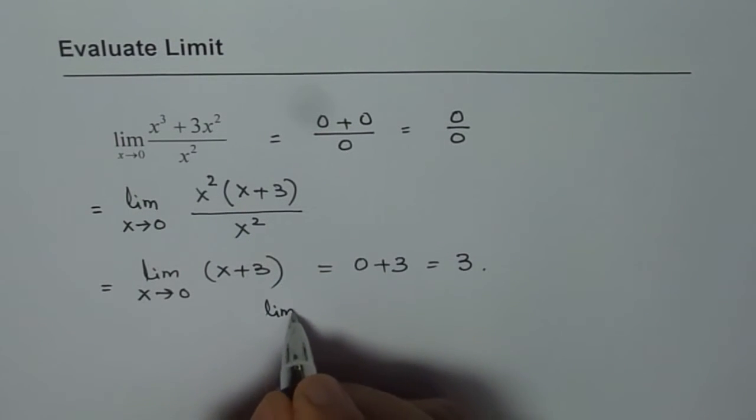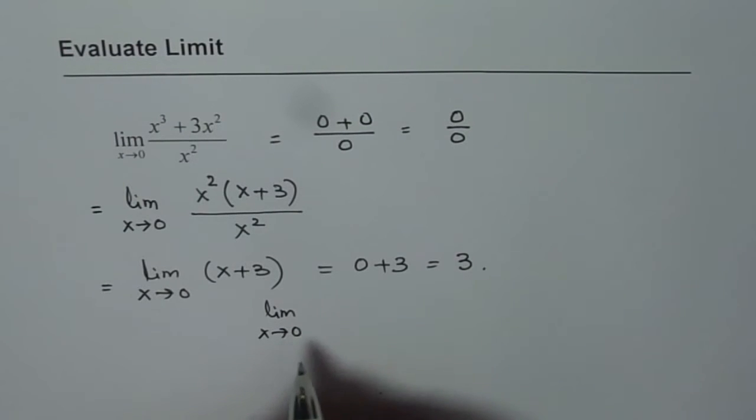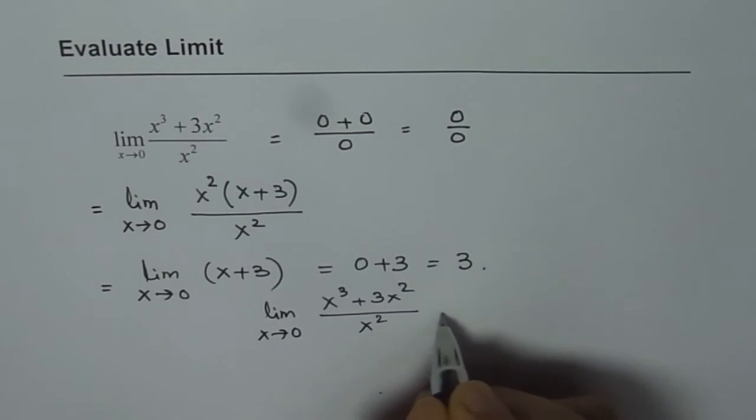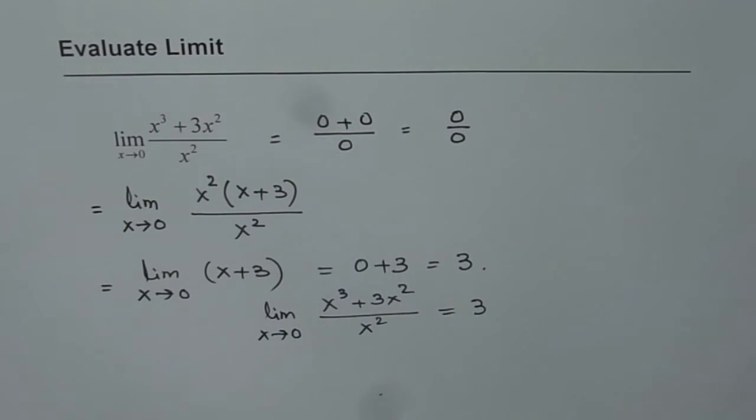And therefore, we get our answer and that is limit as x approaches 0 for x cubed plus 3x squared divided by x squared is equal to 3. Thank you.